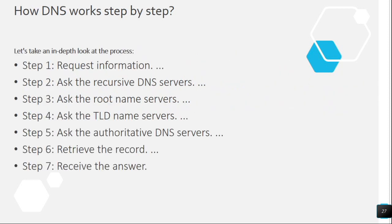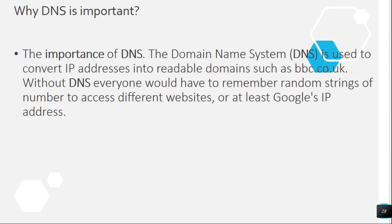Question 26: How does DNS work, step by step? Step 1: Request information. Step 2: Ask the recursive DNS servers. Step 3: Ask the root name servers. Step 4: Ask the TLD name servers. Step 5: Ask the authoritative DNS servers. Step 6: Retrieve the record. Step 7: Receive the answer.